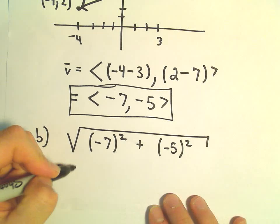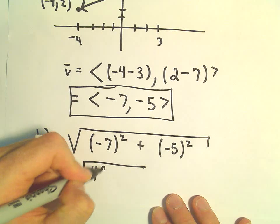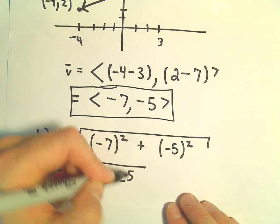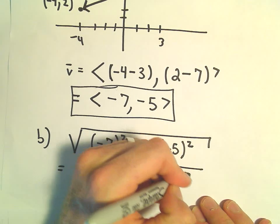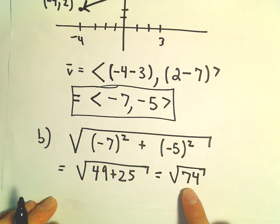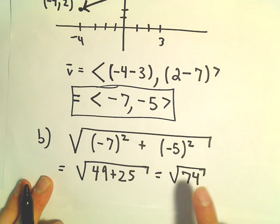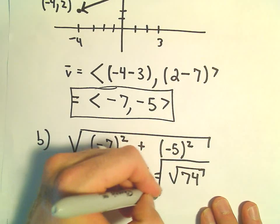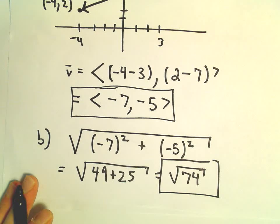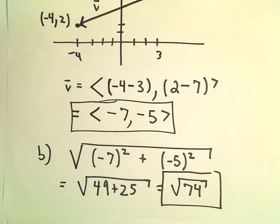So let's see. This is going to be the square root of 49 plus 25. So 49 plus 25, that's going to give us the square root of 74. We could factor that as 2 times 37, but 37 isn't going to factor any further. So I would simply stop here and say the length of our vector is the square root of 74.